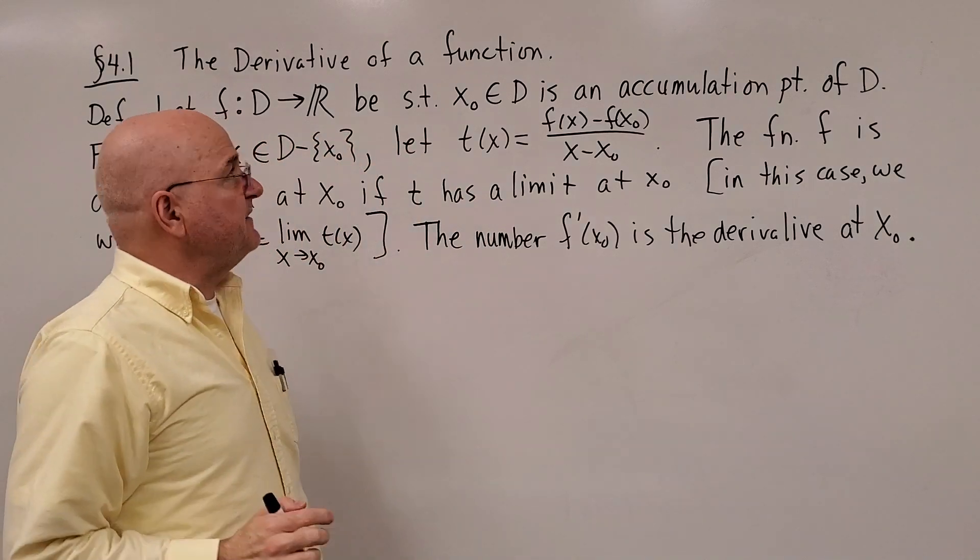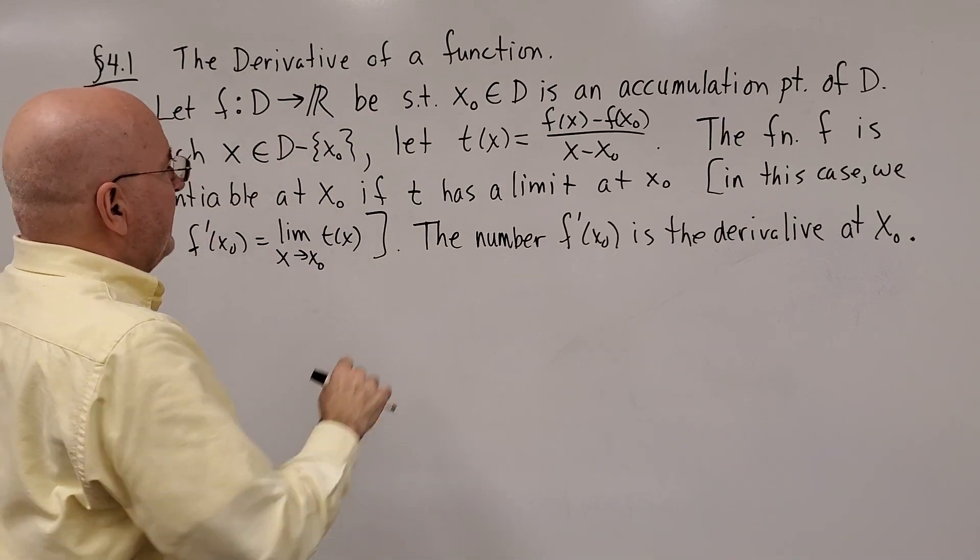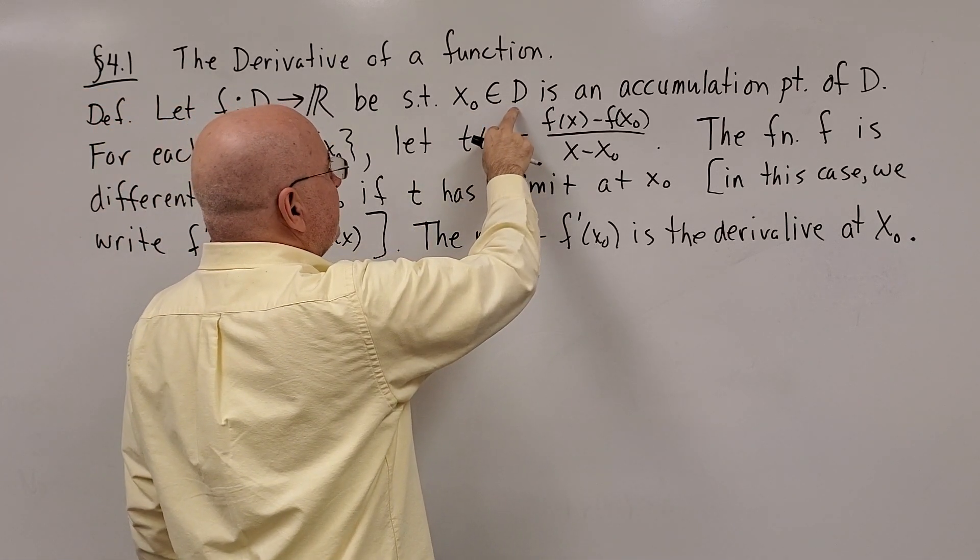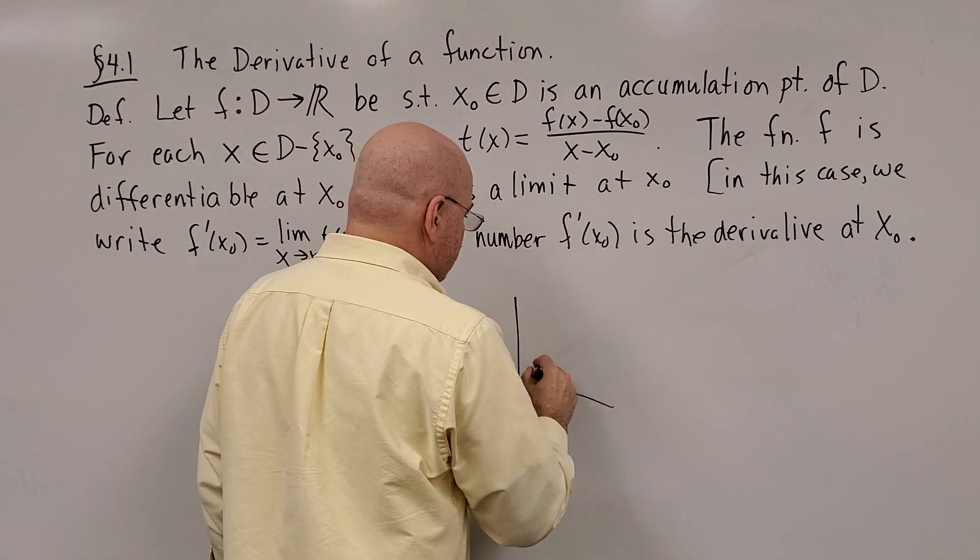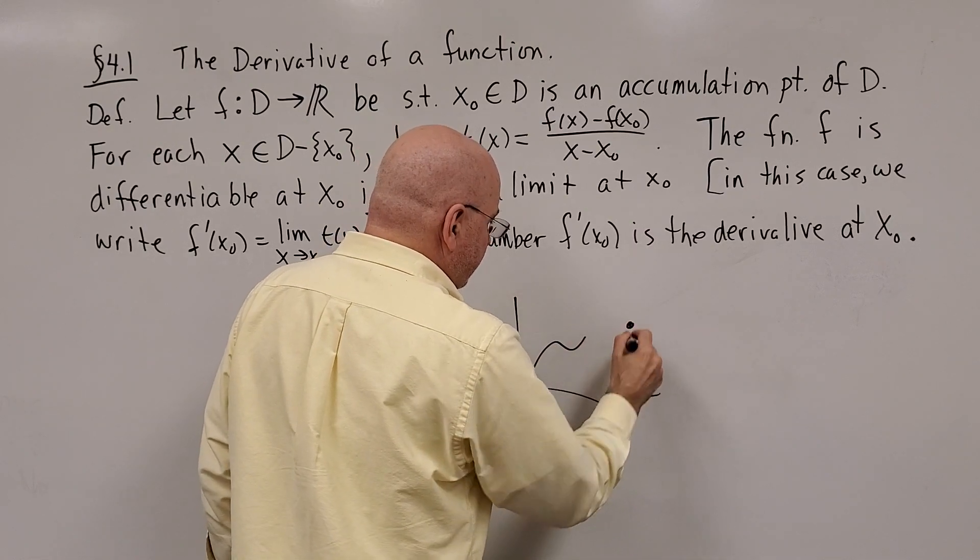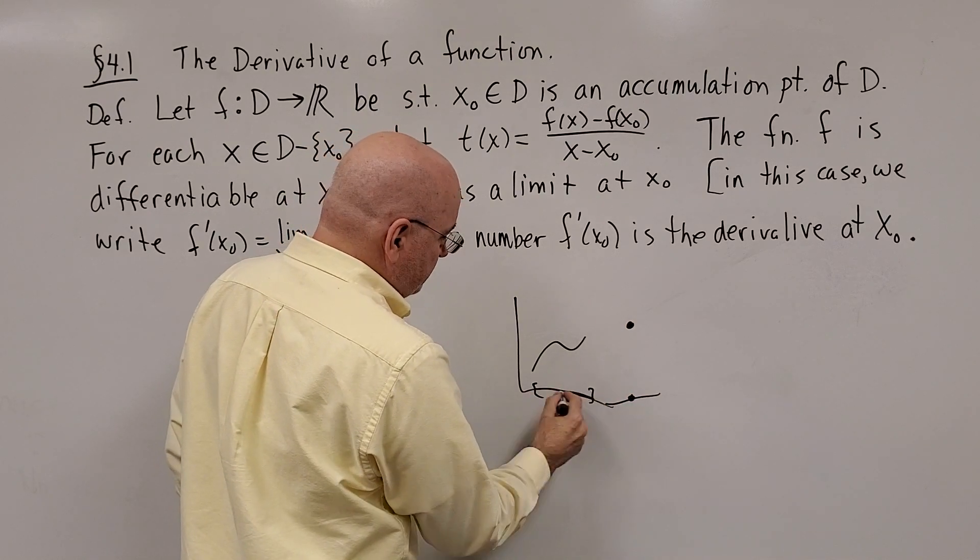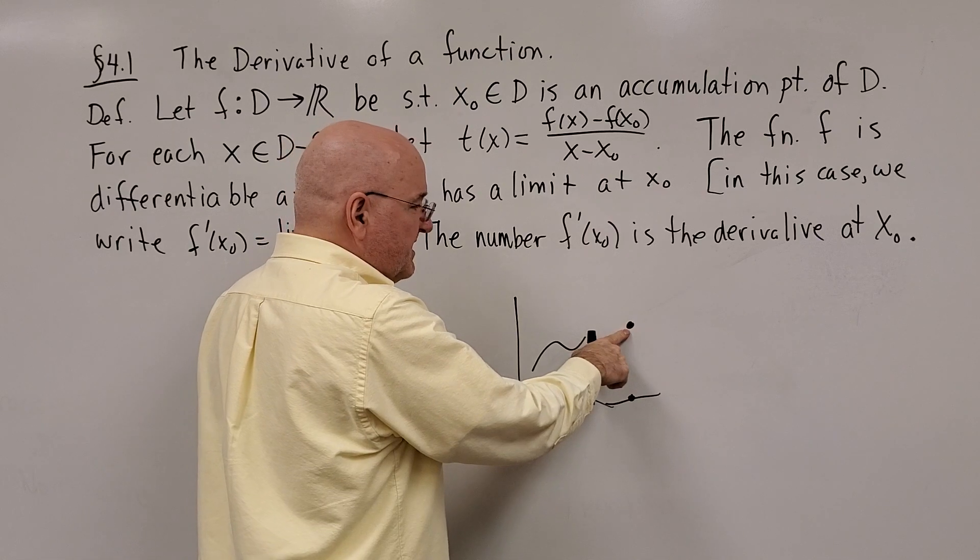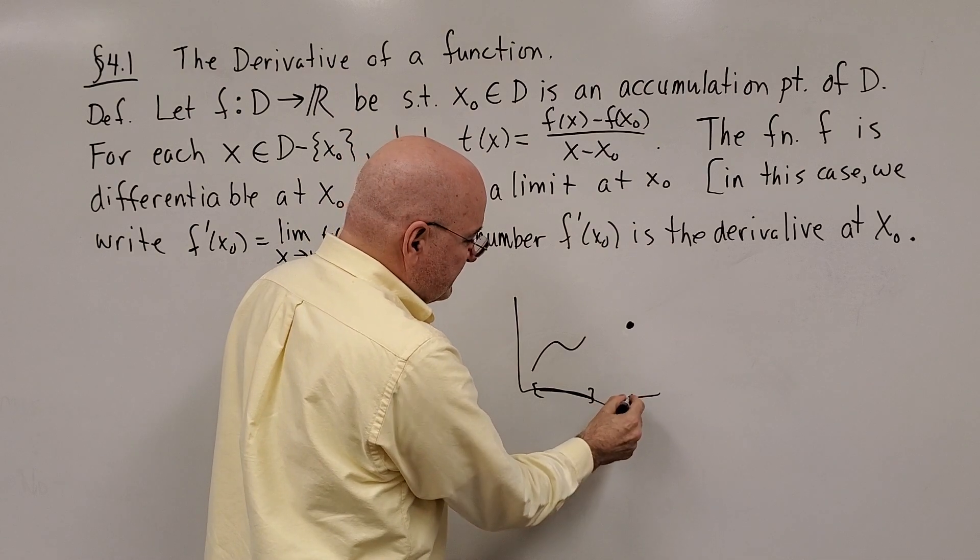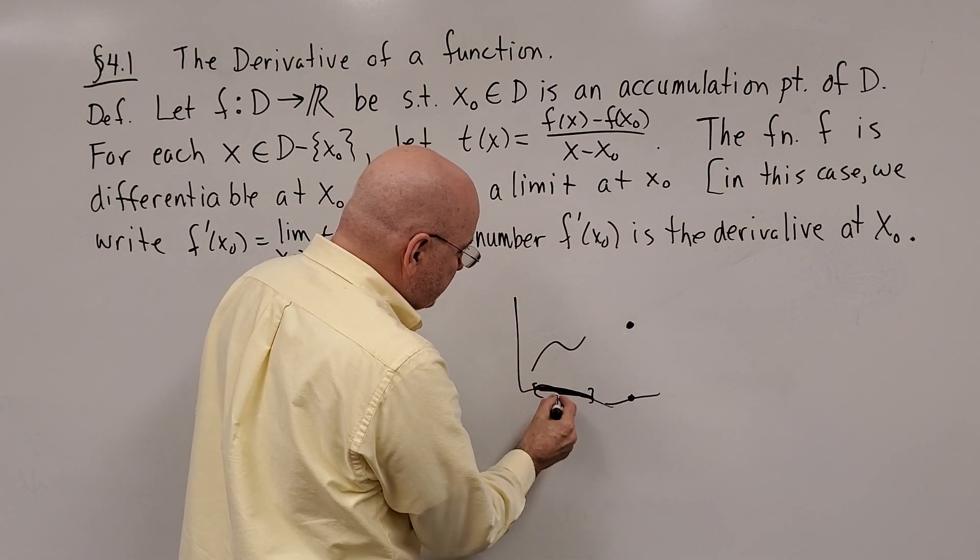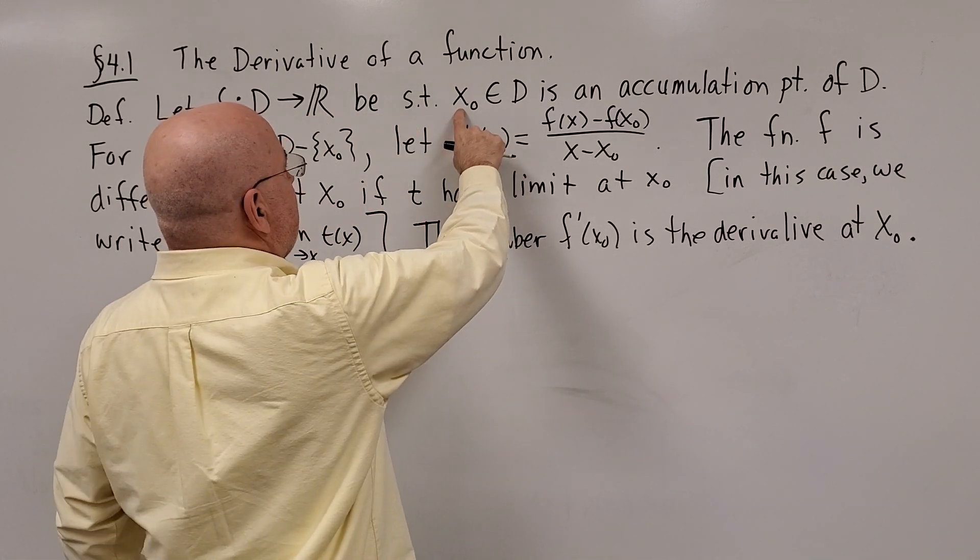Now let's look at the more formal definition. f is a function from domain D into R, and x not is some arbitrary point in D that is also an accumulation point, so it can't be an isolated point. For example, if the function looks like this, this is an isolated point in the domain. The function is not differentiable here because it's not an accumulation point. All of the points in this closed interval are accumulation points.